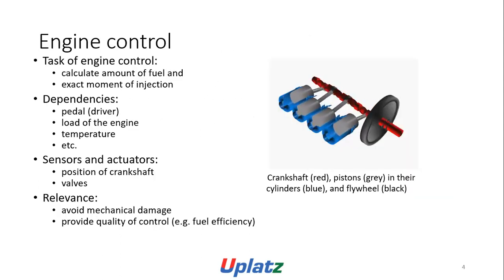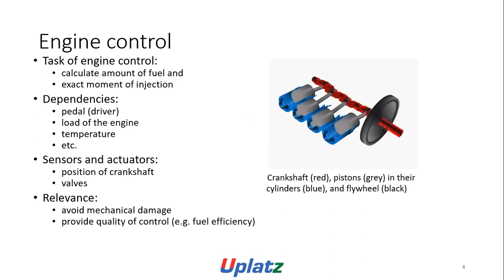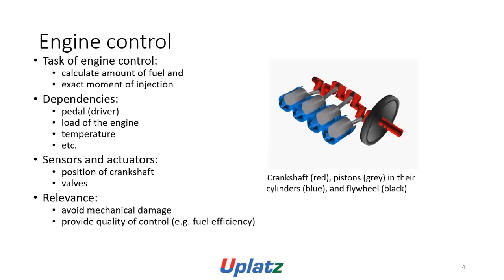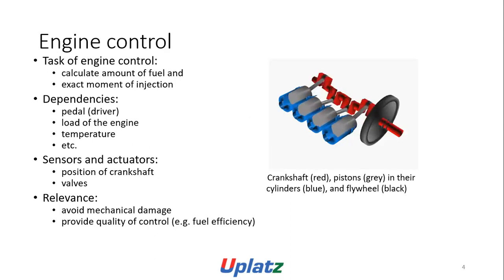Engine control: the task of engine control is to calculate the amount of fuel and exact amount of injection. Dependencies include the pedal, driver, load of the engine, temperature, sensors and equipment, position of crankshaft, valves, elements — to avoid mechanical damage and provide quality control. Examples include previous efficiency, crankshaft, thread, piston grade, and flywheel.